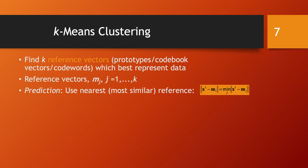If we had the reference vectors already — we will discuss how to train the model to find them in a moment — once we have them, prediction is quite simple. Given a new data point X_T, we place it in the cluster whose mean is closest to this data point. In other words, we assign X_T to cluster I if the norm of X_T minus M_I is the minimum over all possible norms X_T minus M_J.